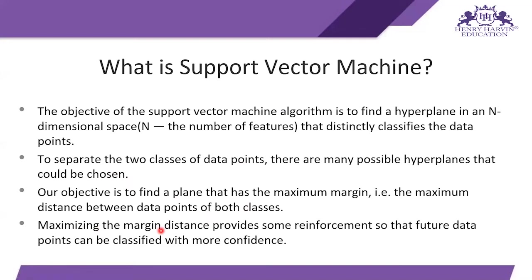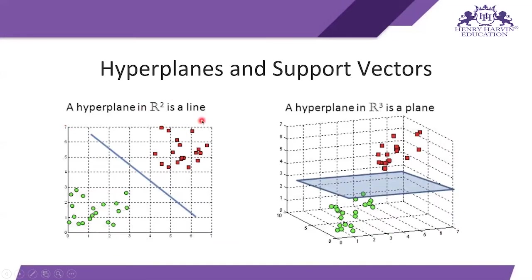Maximizing the margin distance provides reinforcement so that future data points can be classified with more confidence. If we have a larger margin between the data points and the hyperplane, there is more confidence when classifying new data in the future. As you can see in the visualization, there is a large distance on both sides of the hyperplane, which allows us to classify test data sets effectively.